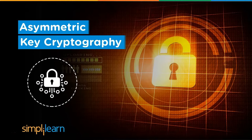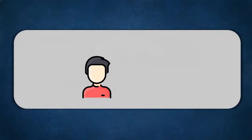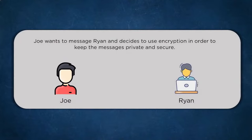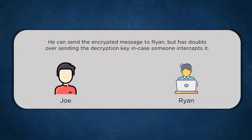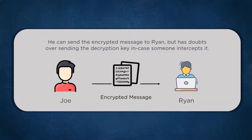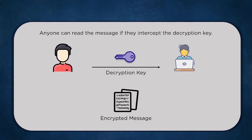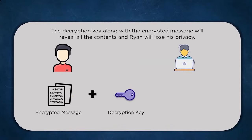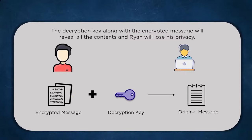Consider a realistic scenario: Joe is a journalist needing to communicate with Ryan via long-distance messaging. Joe can easily use symmetric key cryptography to send encrypted data so that interceptors cannot read it. But the tricky part is: how will Joe send the required decryption key to Ryan? Both sender and receiver need the same key. If someone intercepts the key during transmission, cryptography is rendered useless since the third party can then decode all information. Key sharing is a risk that always exists with symmetric key cryptography.